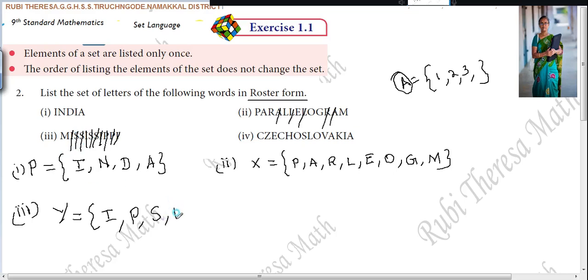Next is what? M. Like this also you can write. It is not compulsory to start from your beginning. Only they are asking to write the letter, set of letters in roster form. That's all. So either you can write like this or like this also. So M comma, I comma, S comma, P. Both are same. Does not change the set. Changing the order, it does not change the set. If you are changing the order of the elements, it won't change the set. Both are same only.